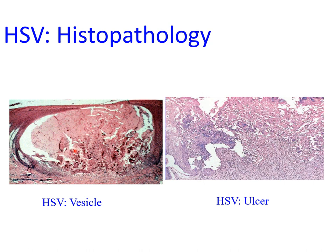Looking at histopathology specimens from the oral mucosa, a vesicle shows a fluid-filled space in the oral mucosa with the surface layer still intact. Once the surface layer of the oral epithelium is breached, that leads to ulceration. Fluid accumulation in the spinous layer, now separated from the basal cell layer, is due to breakage of desmosomal attachments in the spinous layer — a phenomenon known as acantholysis. This is the basis of vesicle formation which later ruptures to leave ulcerations.